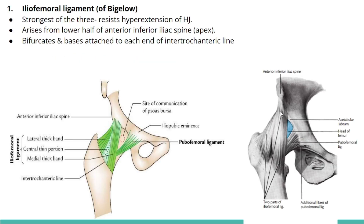The iliofemoral ligament is the strongest of the three ligaments and it resists hyperextension of the hip joint. It arises from the lower half of the anterior inferior iliac spine and is roughly triangular in shape — its apex attaches to the iliac spine, and it comes downward to attach to the intertrochanteric line.